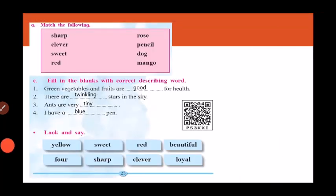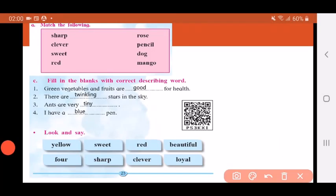Now let us match the following. Here you are given some describing words. And on this side you are given the names of certain nouns which may be things, animals, fruits, flowers. You have to match the describing word to the thing where it will match.